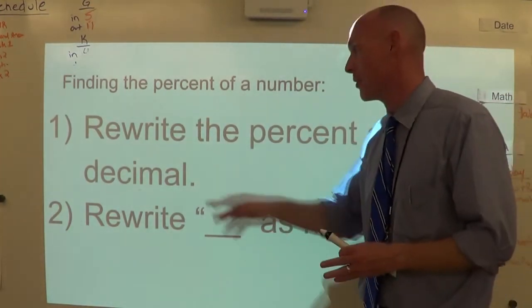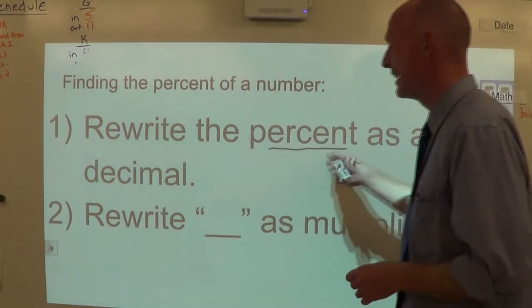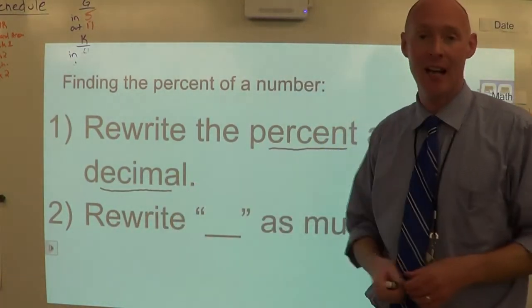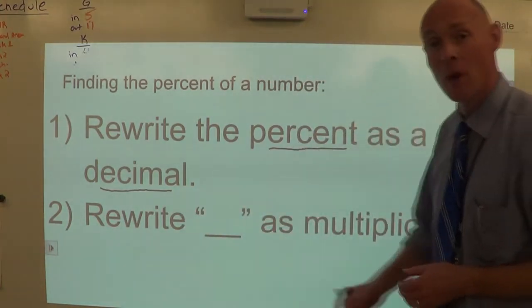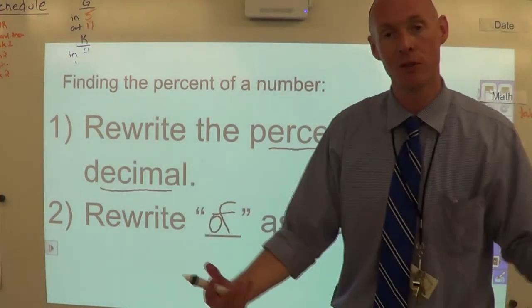Before we actually do work with numbers, first rule is we're going to rewrite the percent as a decimal. We've been working with it all week. The next thing we're going to rewrite is a word as multiplication, and that word is 'of'. Now I get it, you're probably saying, how do I use those two rules? I'm going to show you with three short examples and we'll work on it in class.